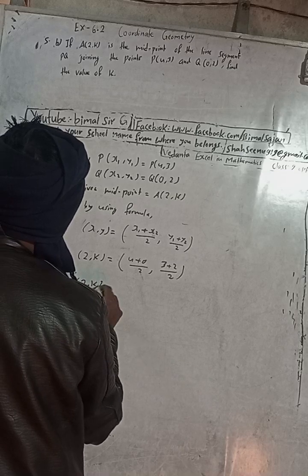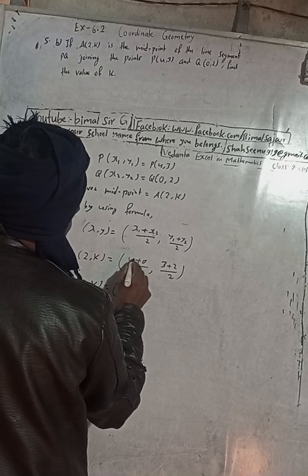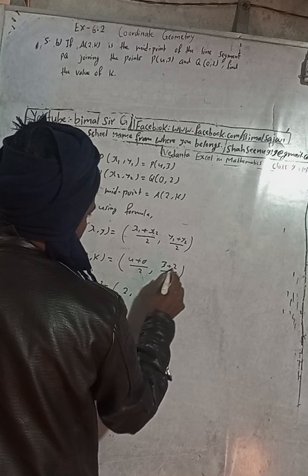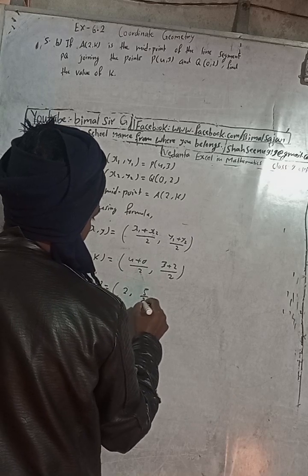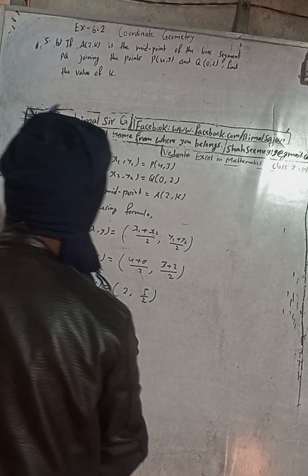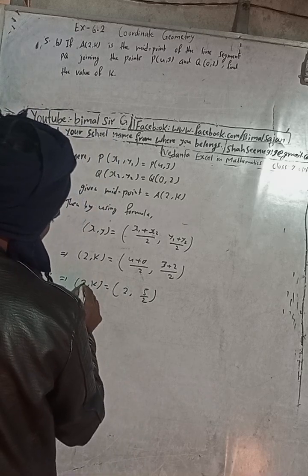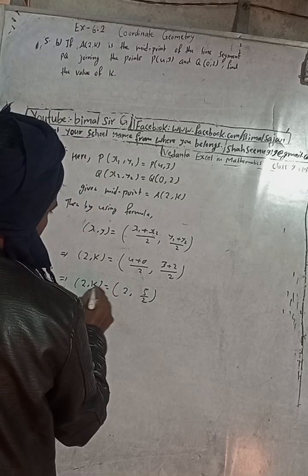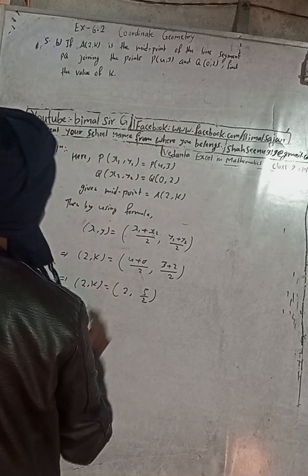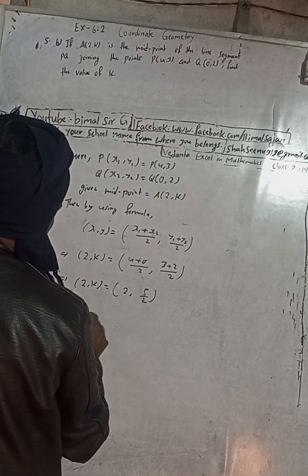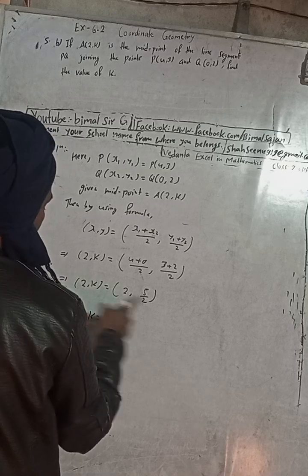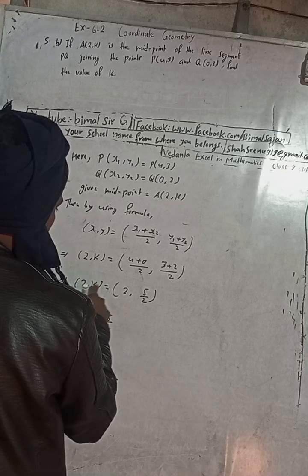So (2, k) equals (4/2, 5/2), which gives us 2 comma 5/2. Therefore, equating corresponding elements: 2 equals 2 and k equals 5/2. So the value of k is 5/2.